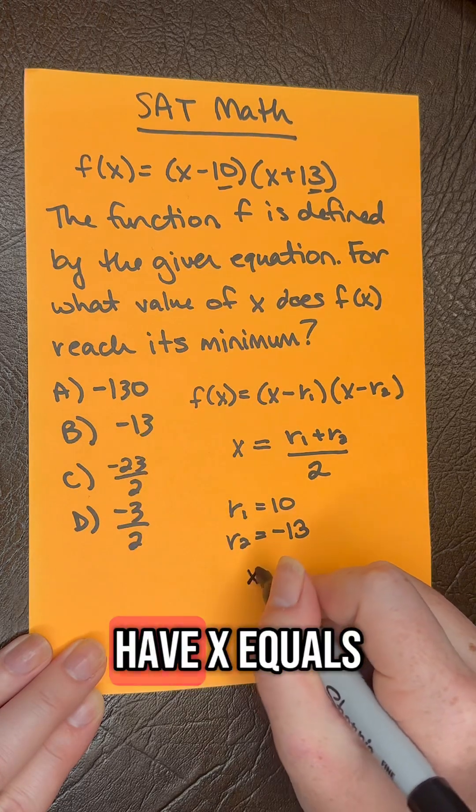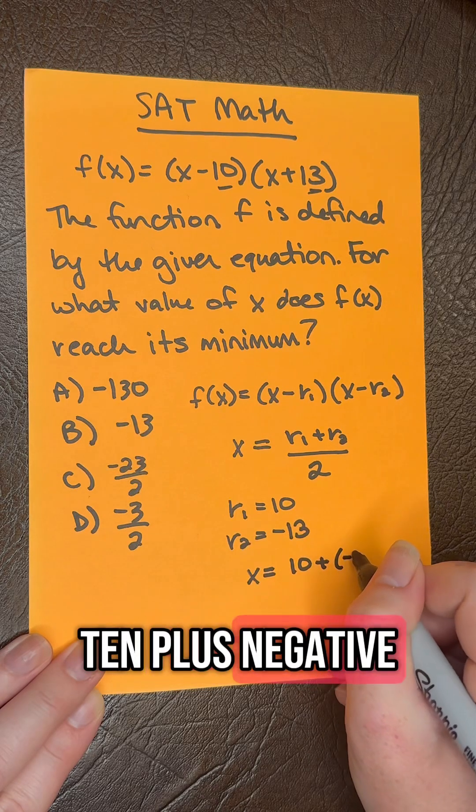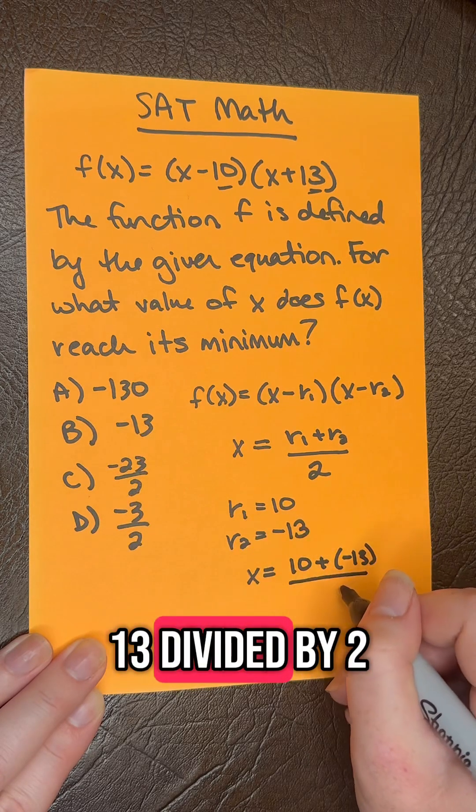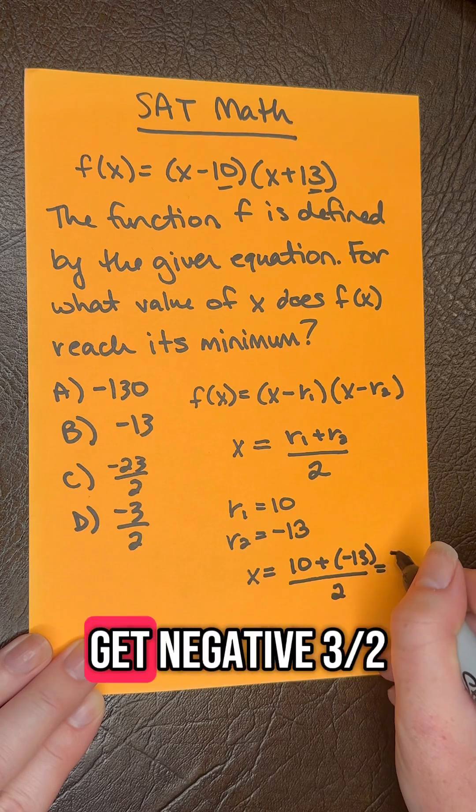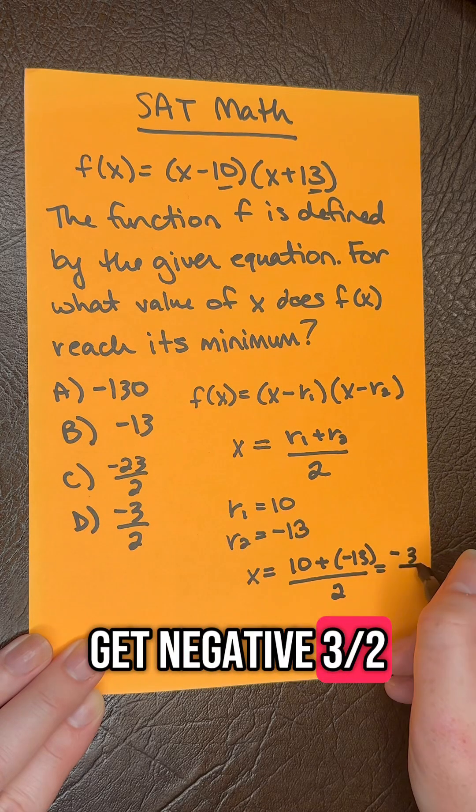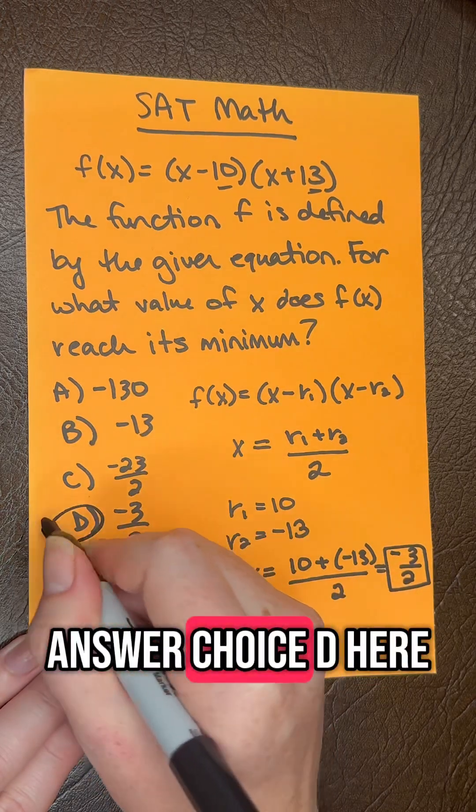Then we plug in, so we have x equals 10 plus negative 13 divided by 2. And when we simplify that, we're going to get negative 3 halves, which equals answer choice D.